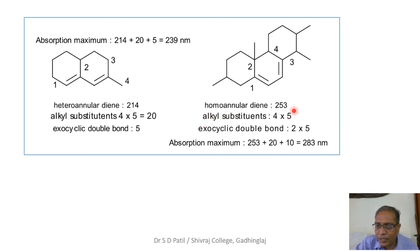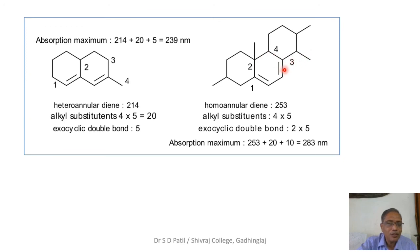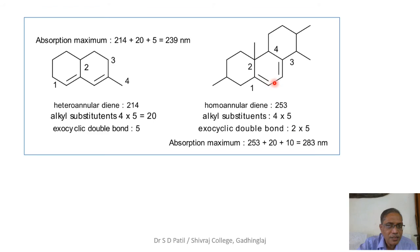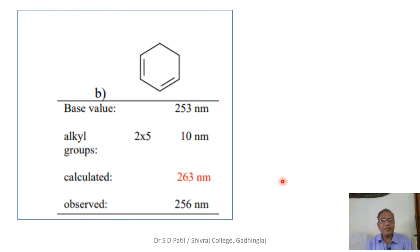The next structure appears tricyclic, but the diene system is homoannular within the second ring, so the base value is 253 nm. There are four substituents — one to the first carbon, a second to the first carbon, and a third and fourth as ring residues on the fourth carbon — contributing 4 × 5 = 20 nm. There are two exocyclic double bonds: one exocyclic to the third ring and one to ring one, adding 2 × 5 = 10 nm. The total lambda max is 283 nm.